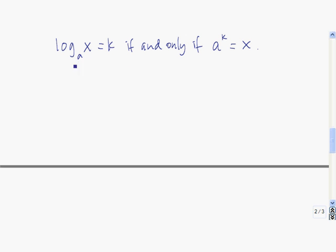Here's a useful way to think about logarithms, because the logarithm is the inverse of the exponential: log base a of x is equal to k if and only if a to the k is x. This is called the logarithmic form, and a to the k equals x is called the exponential form — these two things say the exact same thing.